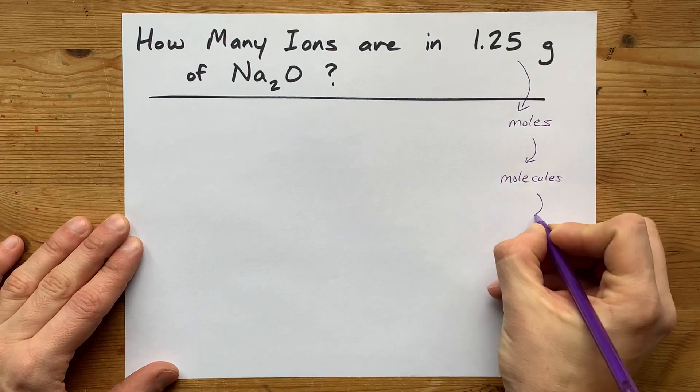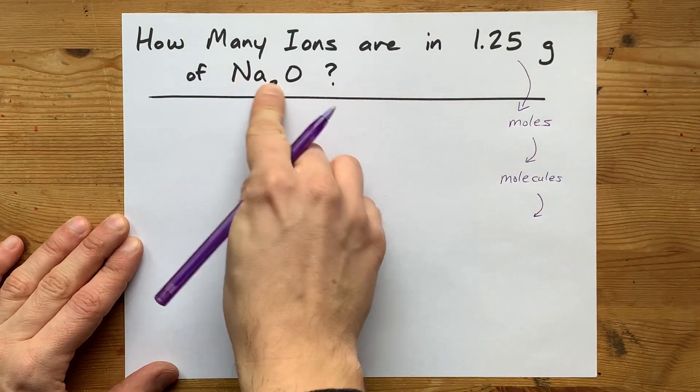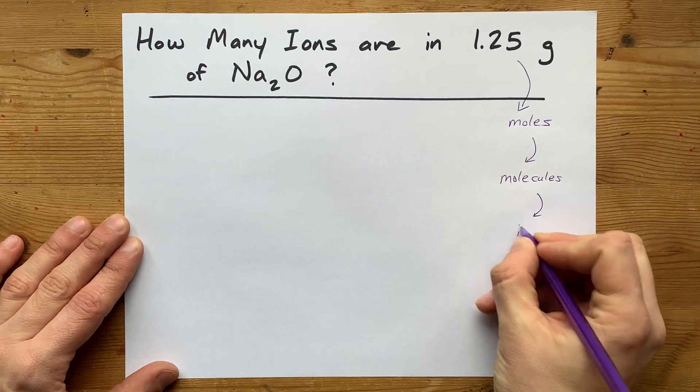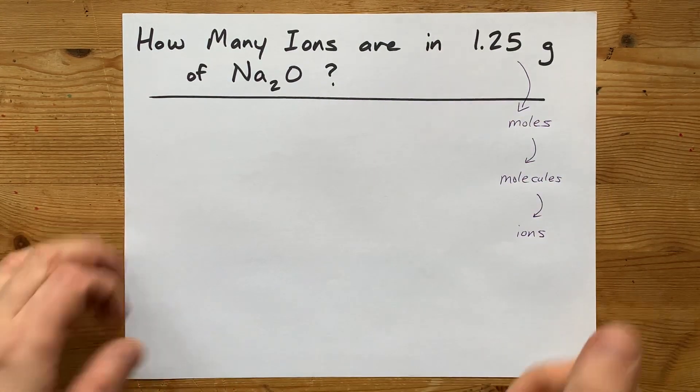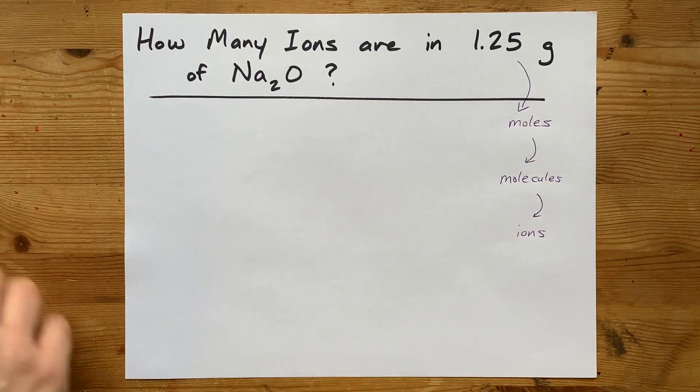And then, because these particles are made of ions, we're going to have to convert that to number of ions as well. It's going to be a three-step process. Let's get it.